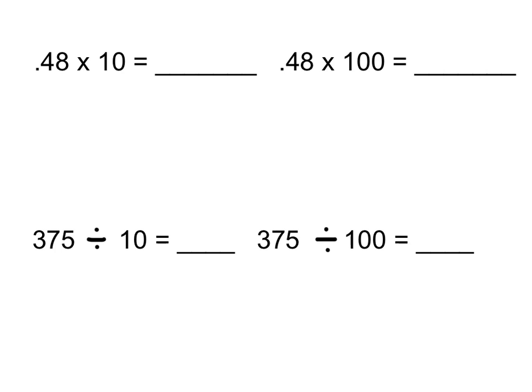Here are a couple of example problems. If we look at the top here, we have 0.48, or 48 hundredths, times 10, and we also have 48 hundredths times 100. So I'm going to take a look at 48 hundredths times 10. Knowing that we're working with the powers of 10, when I move the decimal place to the right one place, that's the same thing as multiplying by 10. I'm going to do just that — I have 48 hundredths, I'm going to move my decimal place one spot to the right. My final answer is 4 and 8 tenths.